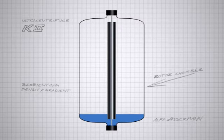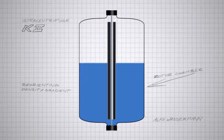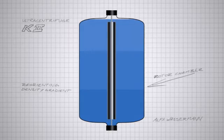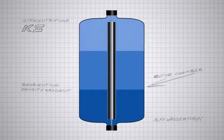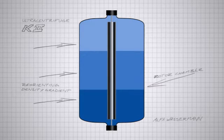First, the density gradient material is introduced into the chamber that houses the rotor and core assembly. As you can see, the gradient material consists of several zones of different density.